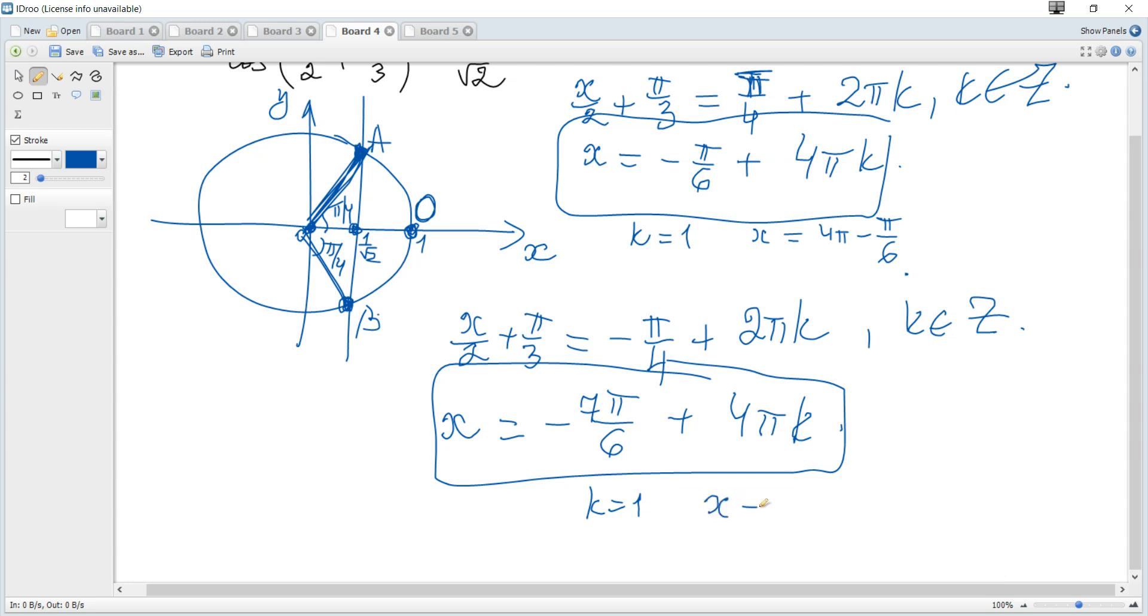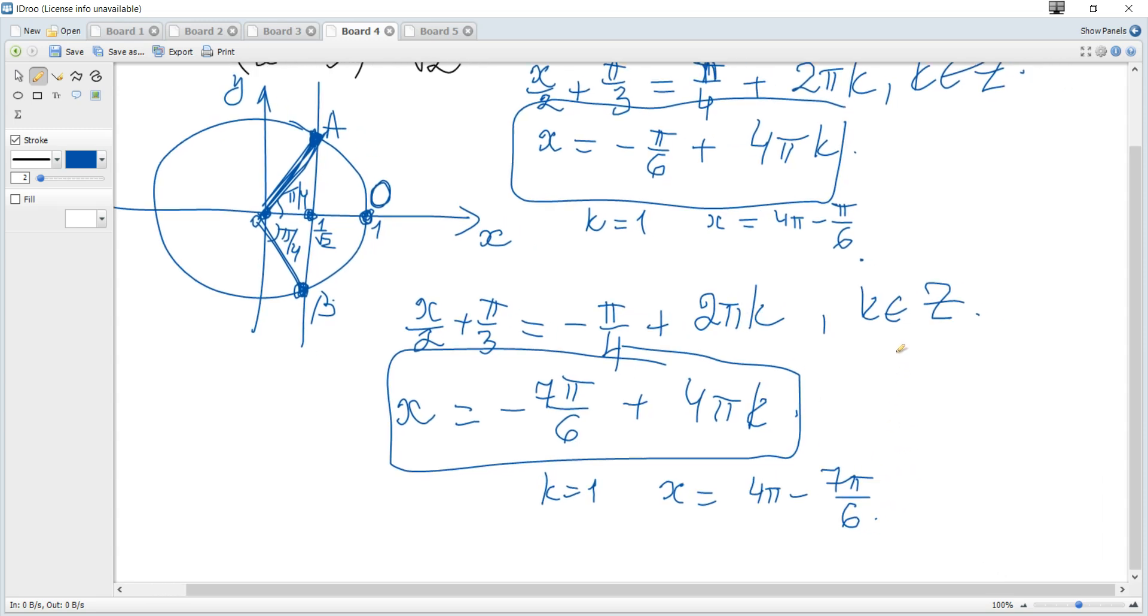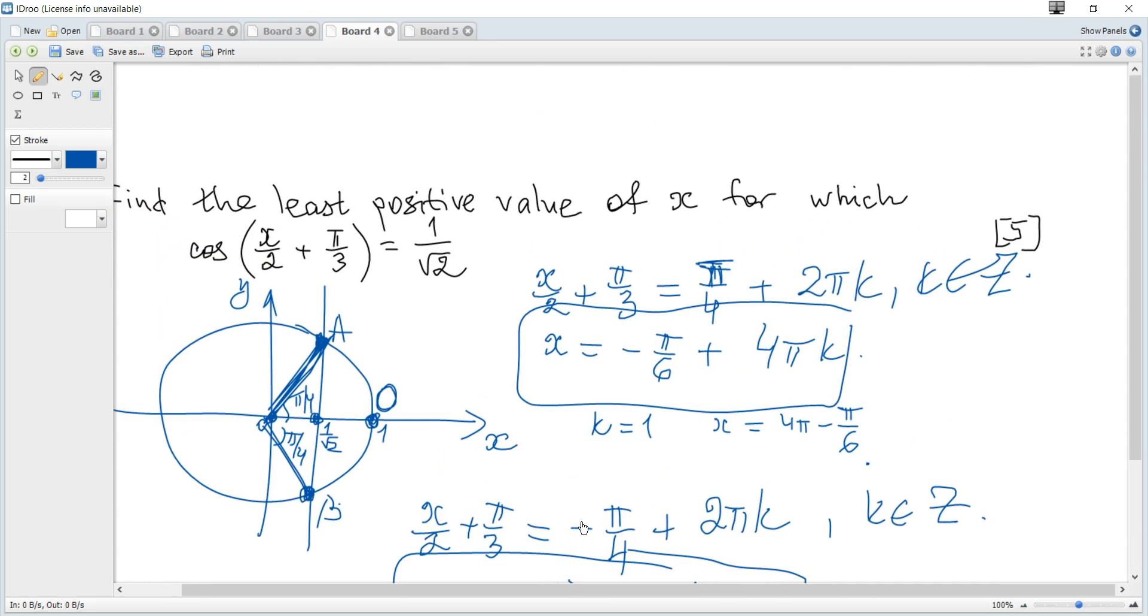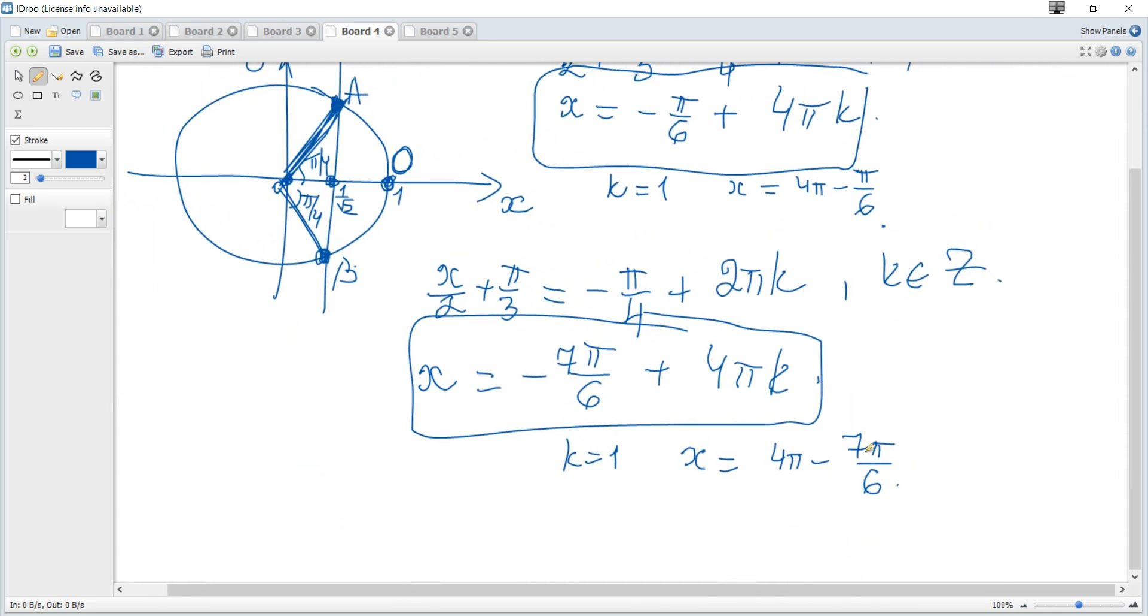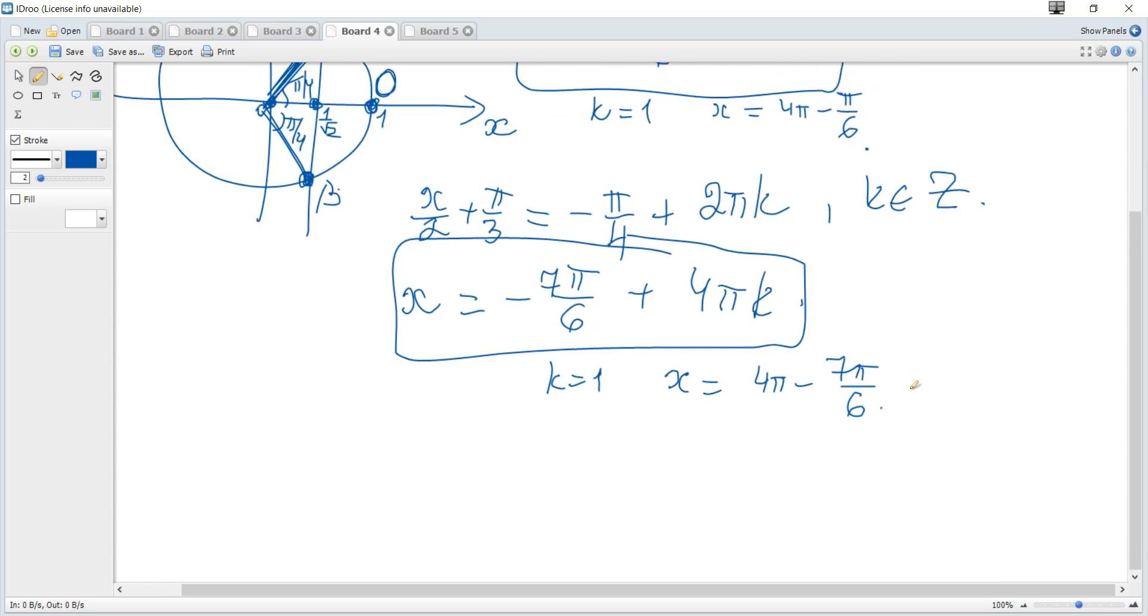We can see that it's the first possible positive solution for this part, and it's also the first positive solution. But we need the least positive, so we can see that it's smaller and hence it becomes the smallest, the least positive solution.